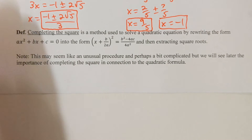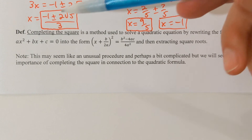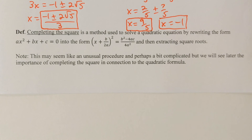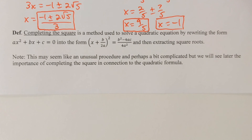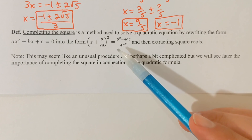Another method that we need to know is called the completing the square method. Here's the definition: completing the square is a method used to solve a quadratic equation by rewriting the form ax² + bx + c = 0 into another form.